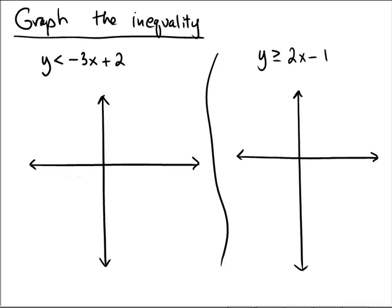So first graph we have is y is less than negative 3x plus 2. In this video I'm going to make all of my lines being in the slope-intercept form with the y's isolated so that I can use a shortcut for the shading. So y is less than negative 3x plus 2.